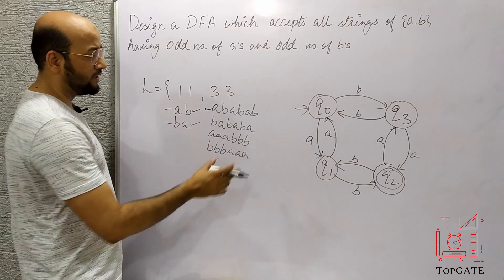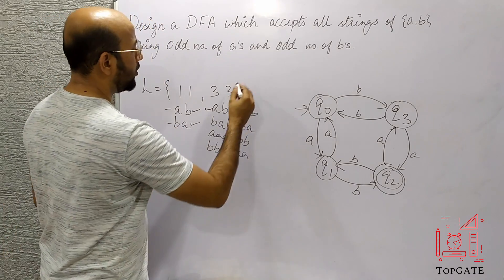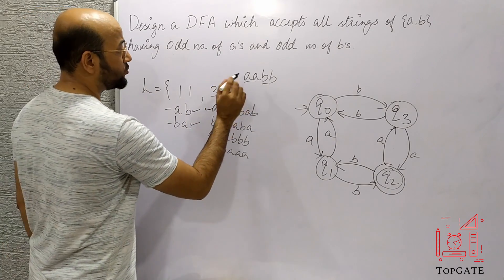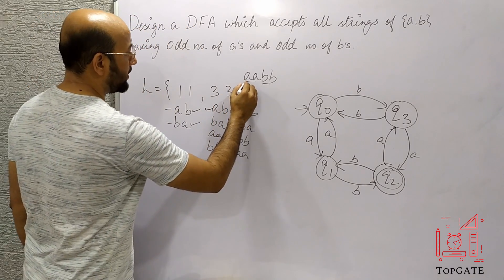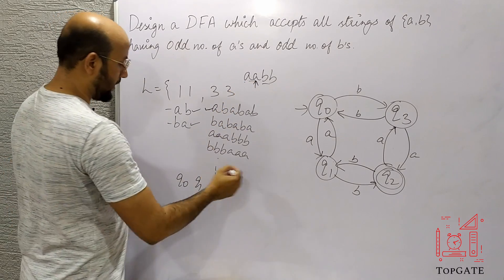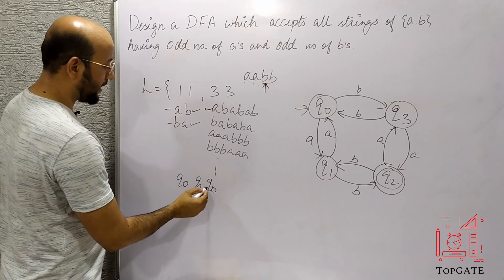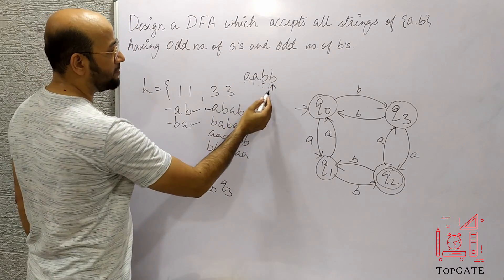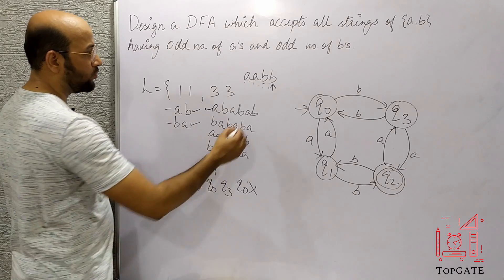Let us also check that an invalid string gets rejected. The string AABB has two A's and two B's — even number of A's and even number of B's — so it should not be accepted. Starting at Q0, input A goes to Q1; at Q1, input A goes back to Q0; at Q0, input B goes to Q3; at Q3, input B goes back to Q0. Q0 is not the final state, therefore this string is correctly rejected.